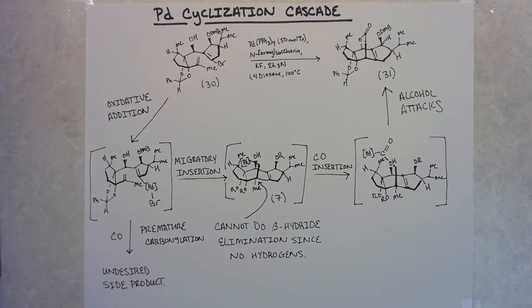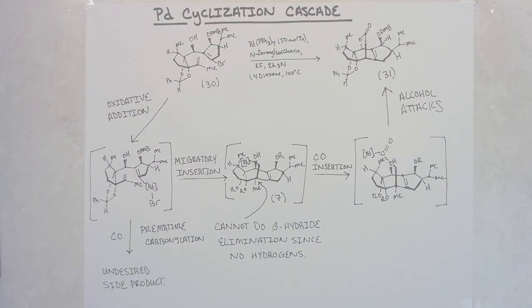What they hypothesized was that they could use in-situ generation of CO to maintain low concentrations of CO, favor the six-membered ring formation, and then allow the carbonylation of the lactone to occur. Ultimately what they were able to do was use N-formyl saccharin as a carbon monoxide source with KF as an additive. Under the conditions where they had 50 mole percent of palladium tetrakis, they were able to get a 57% yield with a slight bit of remaining starting material and some of the butyrolactone. This was the best yield they were able to get under these conditions, and so that was what they went forward with.